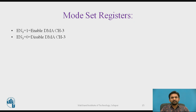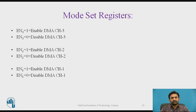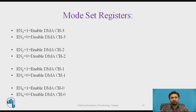The next bits D3, D2, D1, and D0 — these 4 bits are used to enable DMA channels 3, 2, 1, and 0 respectively when the flag value is 1. If EN equals 0, it represents disabling that particular DMA channel 3, 2, 1, and 0 respectively.